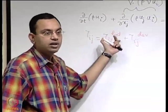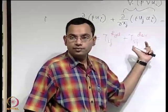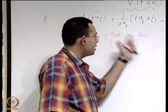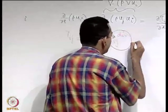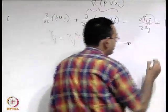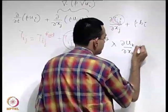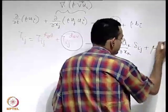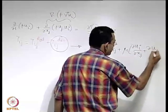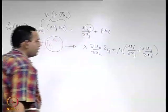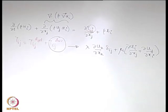It does not mean that when the fluid is in motion the hydrostatic component is not there — it is definitely there — but something additional is attributed to the deformation of the fluid. We related this deviatoric stress component with the rate of deformation, where lambda and mu are two material property-dependent constants.